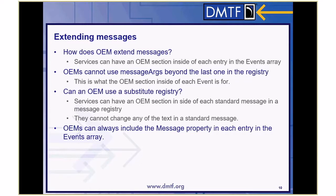How does an OEM extend a message? Some OEMs wanted to extend messages. You can always override a message by including the message body in the event itself, but you shouldn't use a message arg or message ID if you do that. OEMs can't change standard registries, but there are OEM sections inside every event and every message in a message registry, so you can extend within those. Also, because there can be an OEM section in an event, there's no need to use message args beyond the last one in a registry — if the registry says there are two args, it's invalid to come back with three.